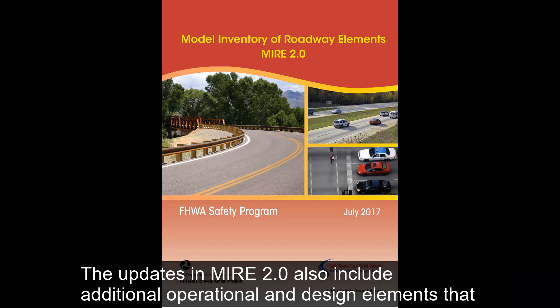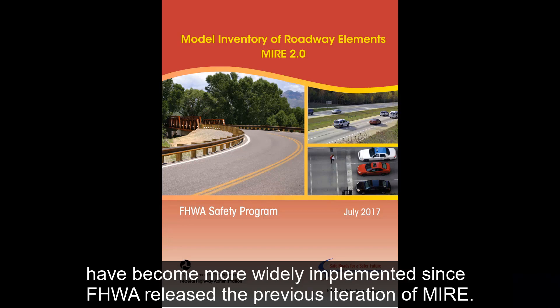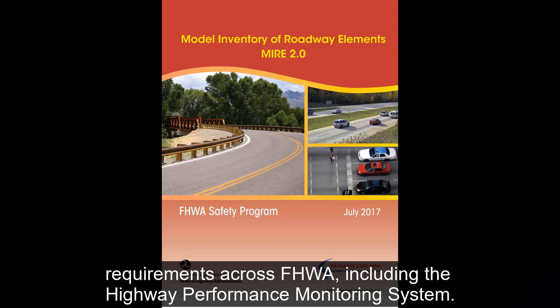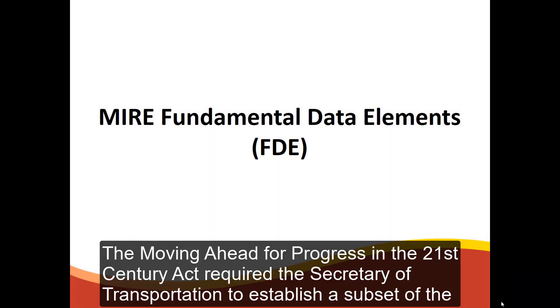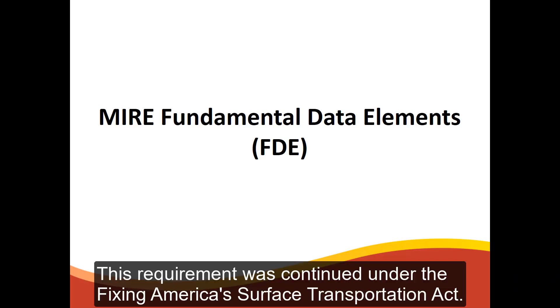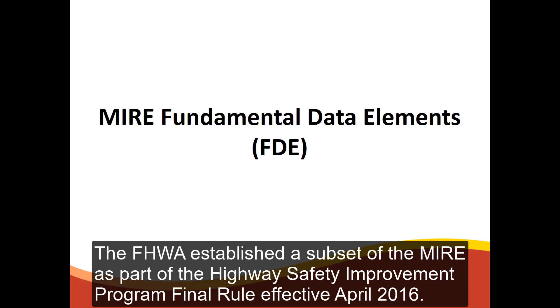MIRE 2.0 features a revised format to reflect agencies' transitions to modern database environments away from siloed datasets. Updates also include additional operational and design elements more widely implemented since FHWA released the previous version. Elements were further updated to better align with other Federal databases, including the Highway Performance Monitoring System. The Moving Ahead for Progress in the 21st Century Act required the Secretary of Transportation to establish a subset of MIRE, a requirement continued under the Fixing America's Surface Transportation Act. FHWA established this subset as part of the Highway Safety Improvement Program Final Rule, effective April 2016.